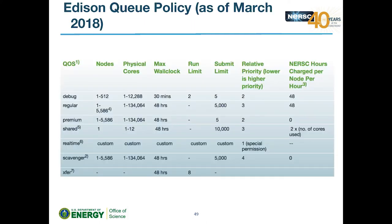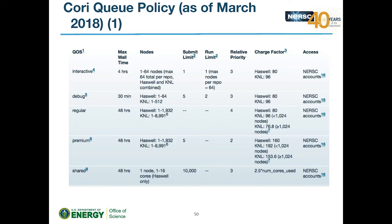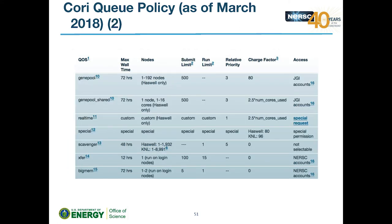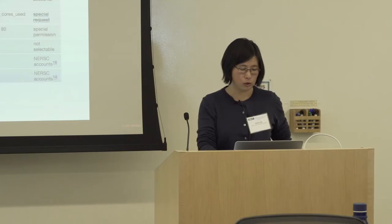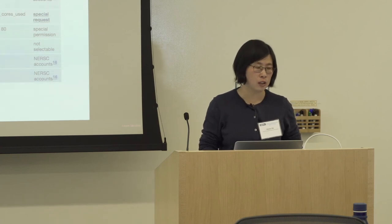The queue policy page lists QoS options, node limits, max walltimes, and job submission limits. For Cori the table is more complex because Haswell and KNL entries share the same table. One notable thing is the JGI gene pool: JGI users can use regular Cori nodes and also have exclusive gene pool nodes, which can be used in shared or exclusive mode.